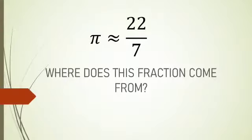By the way, do you know how was the value of pi calculated? Let's see. Pi is approximately equal to 22 by 7. Where does this fraction come from?